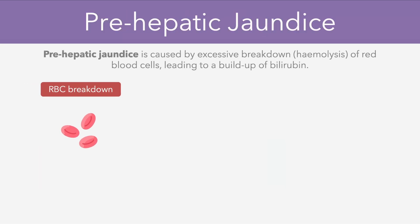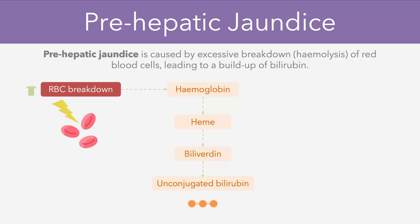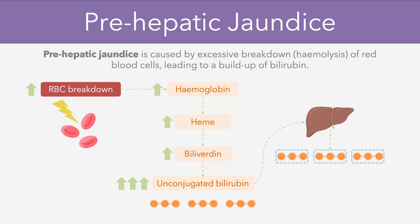Starting with pre-hepatic jaundice first, this is caused by an excessive breakdown or hemolysis of red blood cells, leading to a buildup of bilirubin in the blood. If we have an increase in red blood cell breakdown, anything downstream in this pathway will increase, eventually culminating in a huge rise of unconjugated bilirubin molecules. These molecules are transferred to the liver bound to albumin, and the liver has to work overtime to convert the excess to conjugated bilirubin.